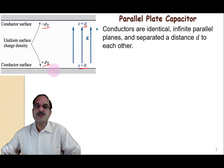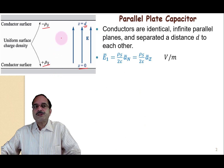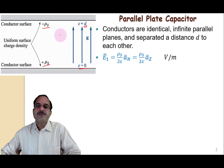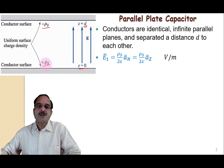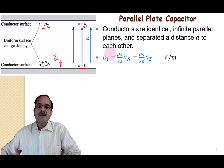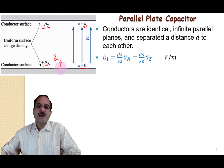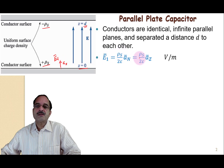The lines of electric field start at the positive charge and terminate on the negative charge. As per the equations we have studied earlier, the electric field intensity E1 due to positive charge ρs is oriented in the normal direction of this surface — the z-direction. So E1 = ρs / (2ε) · az.